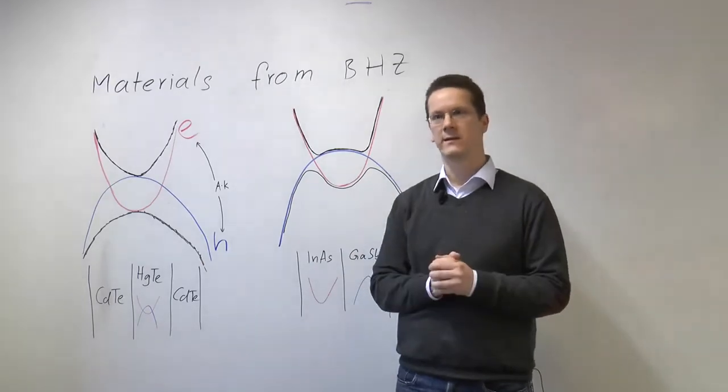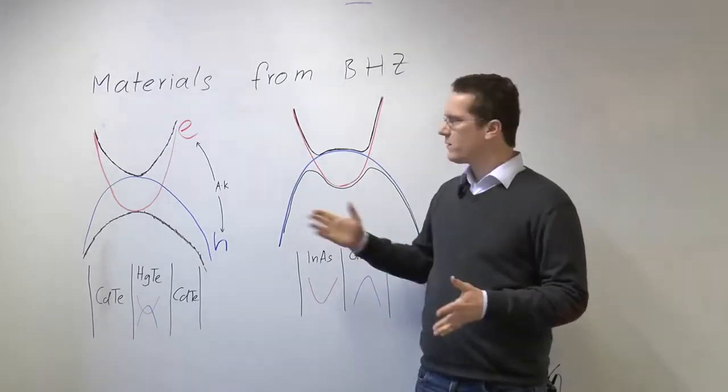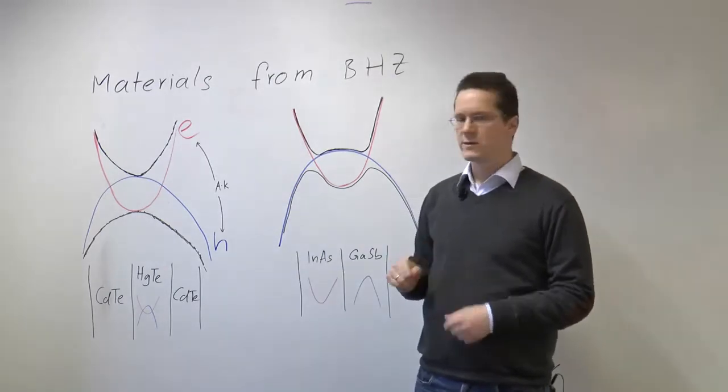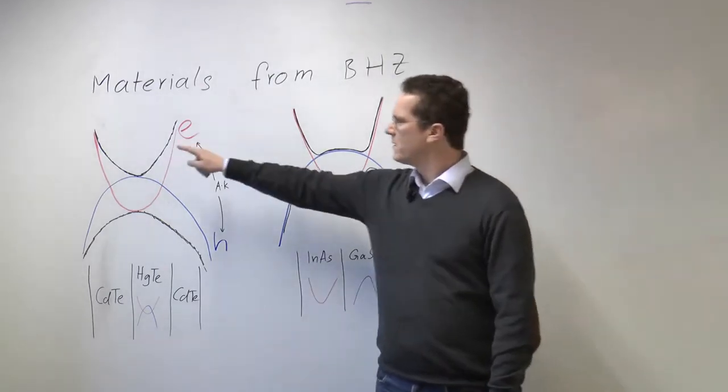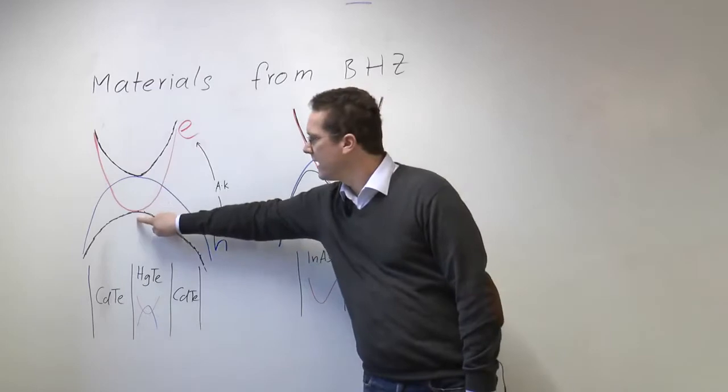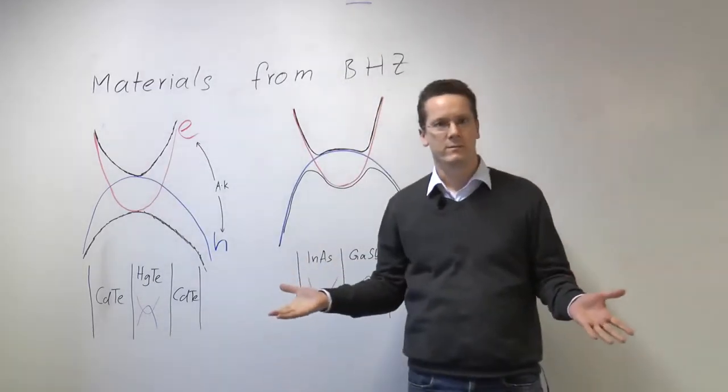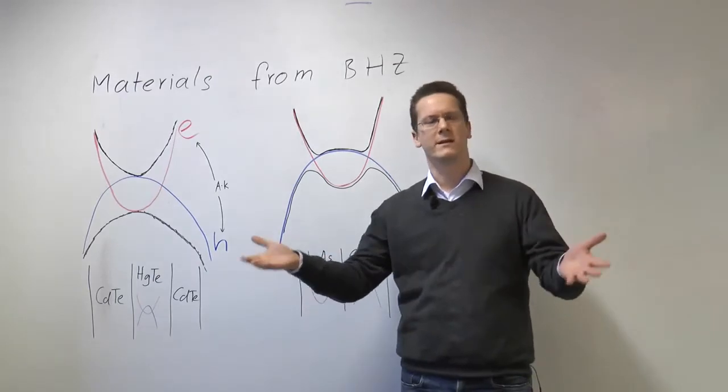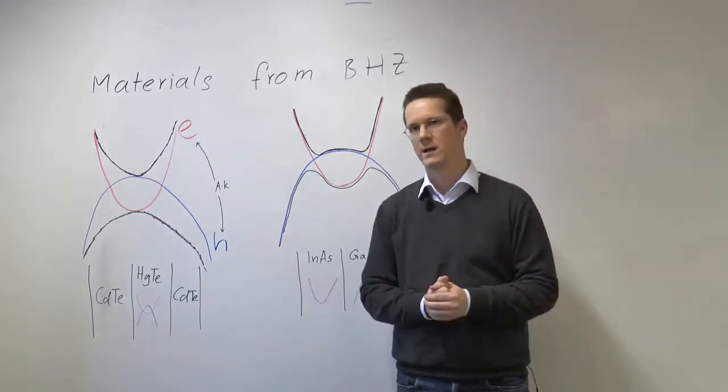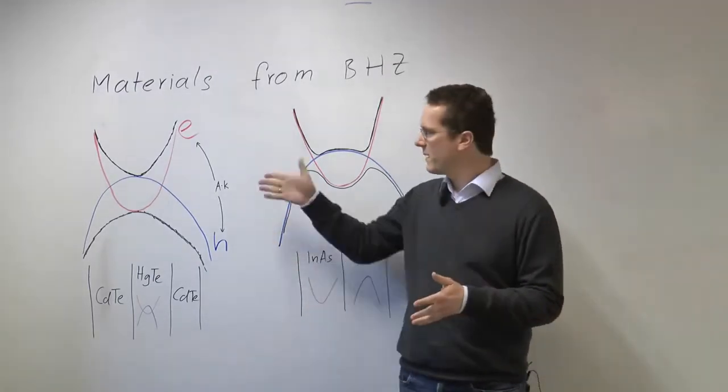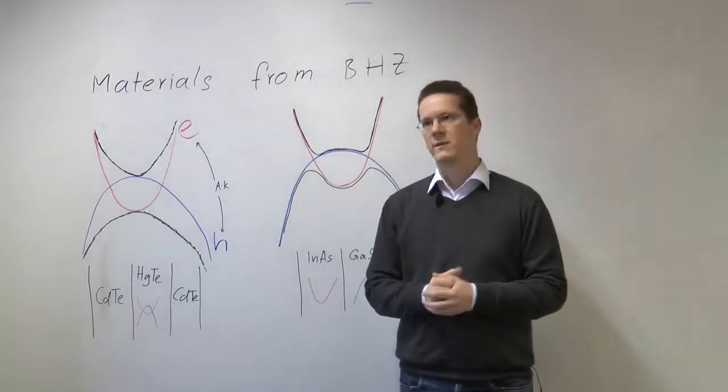So these are the four ingredients. Depending on the strength of this coupling, this coupling then gives you a band structure as shown in black here which can either have the minimum at k equals zero or two minima at finite momentum. So you've seen something similar already in the Kitaev model and the p-wave superconductor. So you will see that these type of band structures come up very often in this course.